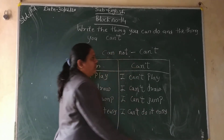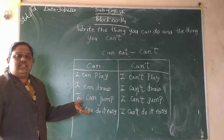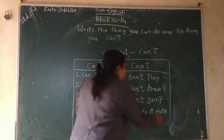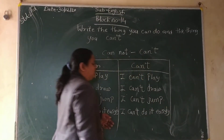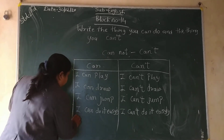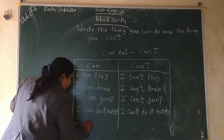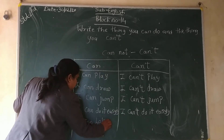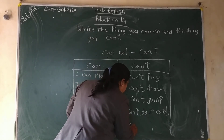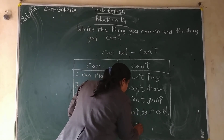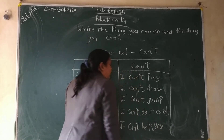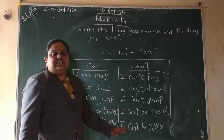If you have to solve the problem also, then you can solve it easily — write it easily, means it will be very easy. Then after that: I can help you. I can help you. Then: I can't help you. Means you can do these sentences very easily.